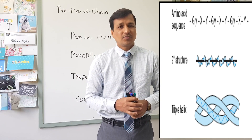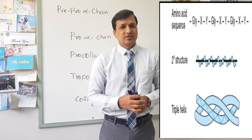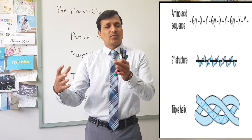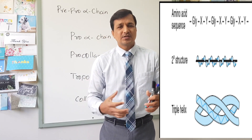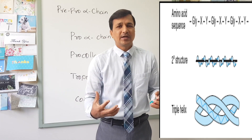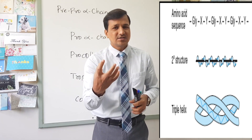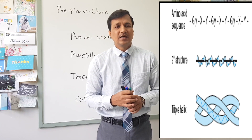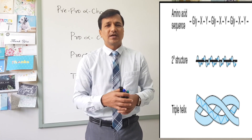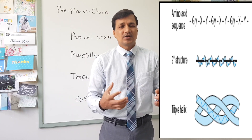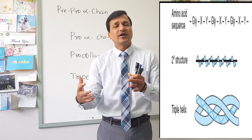Hydroxyproline is basically a modified form of proline. The primary structure of the collagen molecule contains glycine, X, and proline or hydroxyproline. Because of the presence of proline — which has a rigid side chain — it leads to kinks or bends in the polypeptide chain, and because of this the alpha chain looks like an alpha helix.